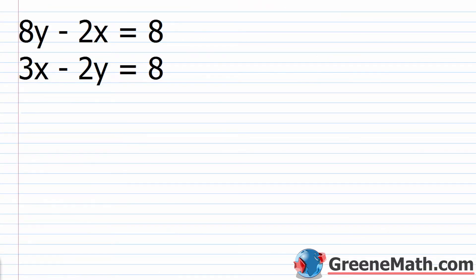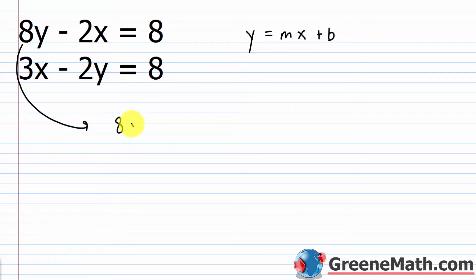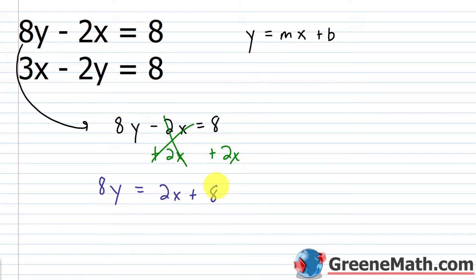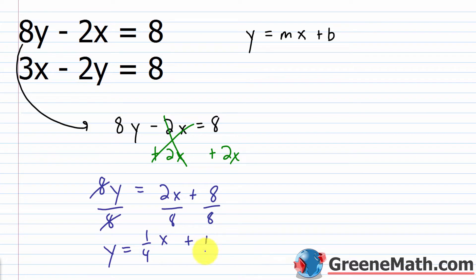Let's look at another example. The first example had both equations already solved for y. This one is more tedious — I like to put everything in slope-intercept form, y = mx + b, to make graphing easy. For 8y minus 2x equals 8: add 2x to both sides to get 8y = 2x + 8, then divide by 8 to get y equals one-fourth x plus 1.